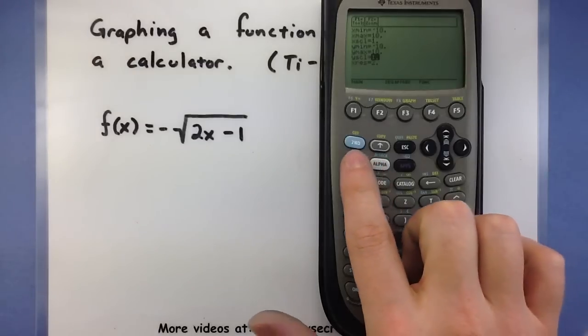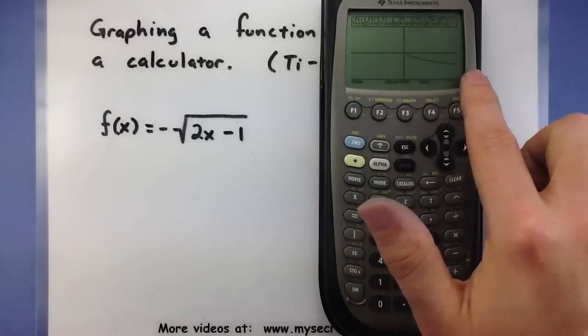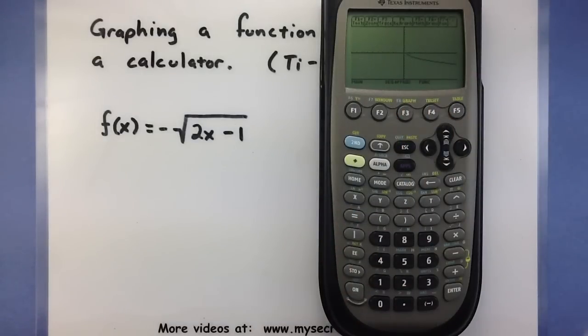Alright, let's press our green button in F3 and see what this graph looks like. You can see that the calculator has drawn the graph and we have a good idea as to what it looks like.